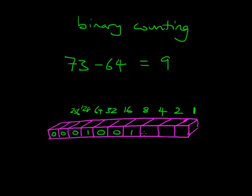And so now we've got 9 minus 8, which is 1. So we won't need any 4s, we won't need any 2s, and we will need that final 1. 1 minus 1 is 0, and so we're done.